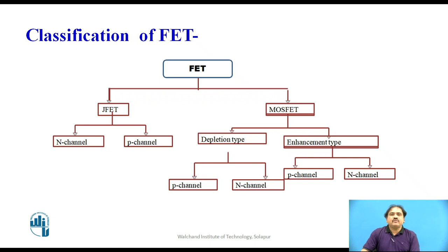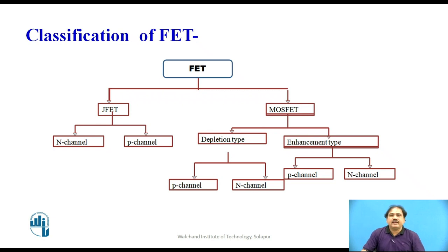Before we go to the actual construction, let us classify this FET. FETs are classified into two groups basically. One is called the junction FET, shortly called J-FET, and the second is the MOSFET, which stands for metal oxide semiconductor FET. Below the J-FET, we get two more classes: one is called N-channel and the other is called P-channel. Below the MOSFET, we get two more subtypes: one is called depletion type and the other is called enhancement type.